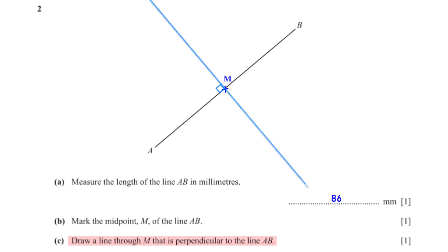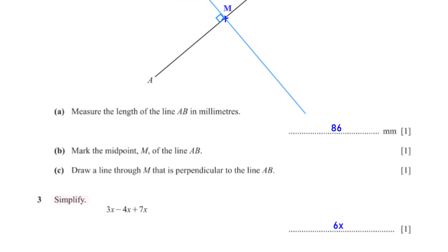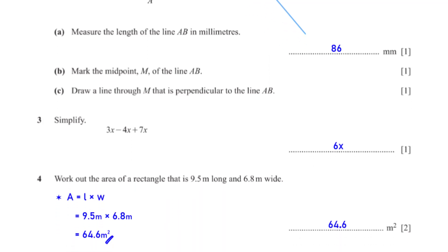Using a protractor we measure and mark an angle of 90 degrees at point M, then we draw a straight line from the 90-degree mark passing through point M. Simplify 3x minus 4x plus 7x: 3 minus 4 plus 7 equals 6, so we have 6x.